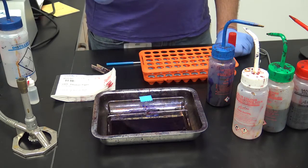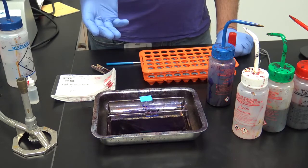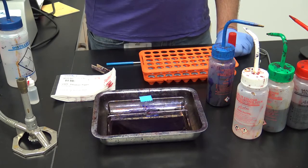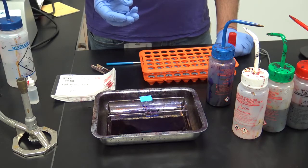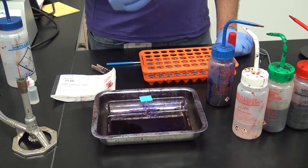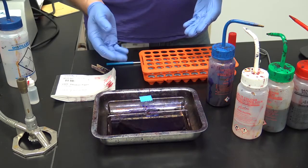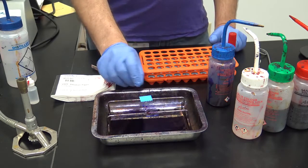When labeling your slide, be sure to use a pencil and not a permanent marker as you may use ethanol and decolorizer in various staining techniques. The ethanol and decolorizer may wash off your label if you use a permanent marker. Therefore, it's advisable to use a pencil when labeling your slide.